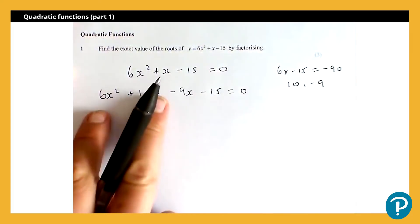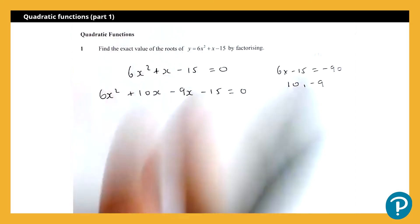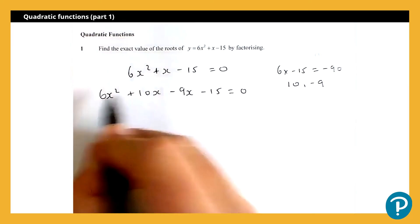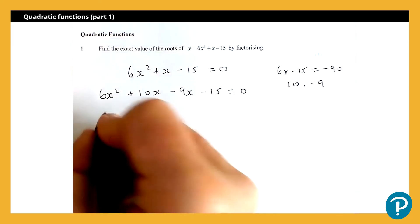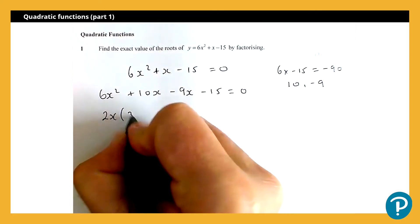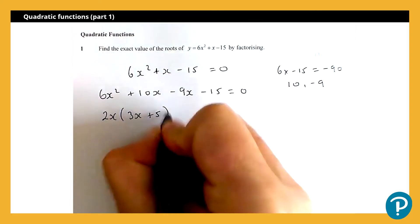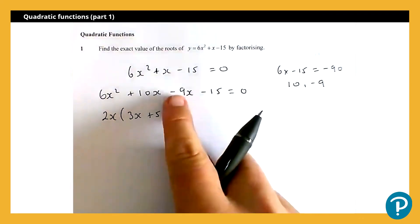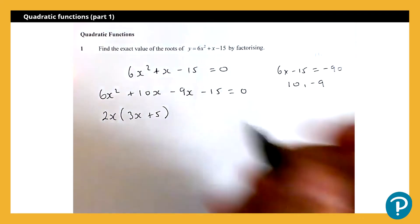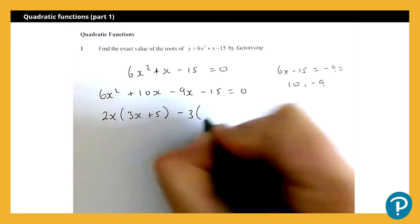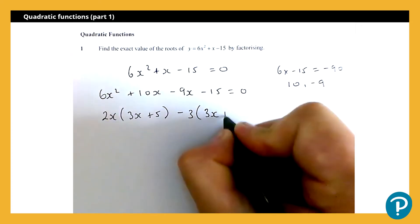I'm going to factorise these two terms and these two terms separately. So highest common factor of 6x squared and 10x is 2x, and then I'll get 3x plus 5. Highest common factor of negative 9x and negative 15 is negative 3, and that will also give me 3x plus 5.